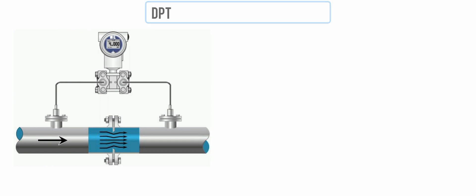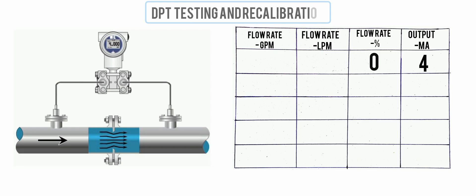Remember before calibrating the transmitter, it must be removed from service. The flow transmitter connected across the orifice produces a current output of 4 milliamps at 0 liters per minute and 20 milliamps at 189 liters per minute or 50 gallons per minute.